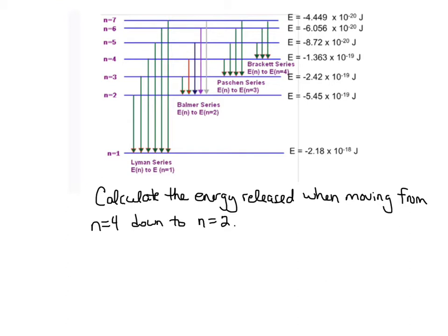Let's say you see a problem, and it says to calculate the energy released when moving from n equals 4 down to n equals 2. Remember that n just stands for the energy level, or the electron shell. So it really wants to know the energy released when you go from the fourth energy level down to the second energy level, which as we know when we go down in energy levels, we release energy. So you can use this diagram, which is on the back of your reference sheet, to answer this question.